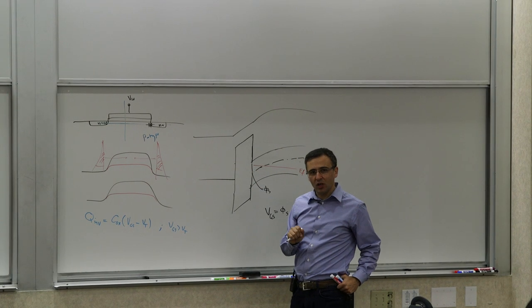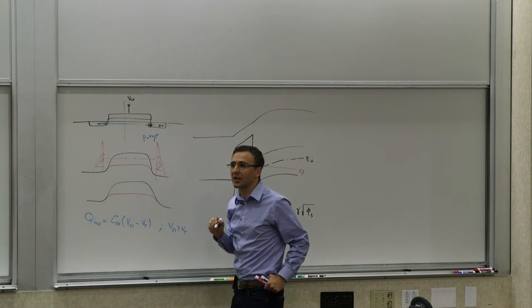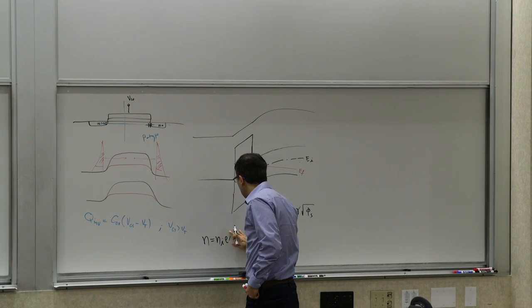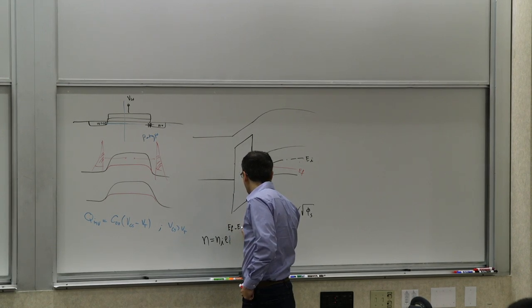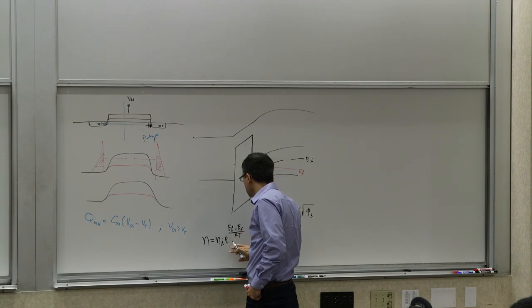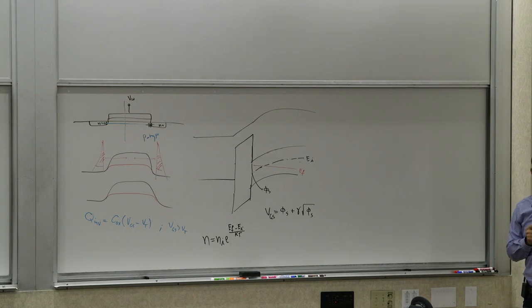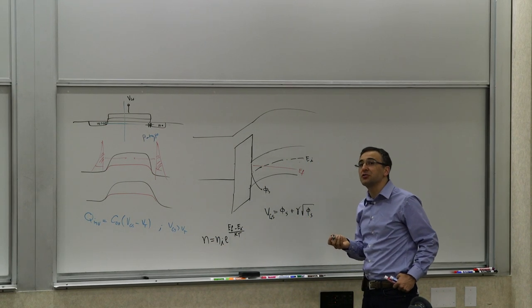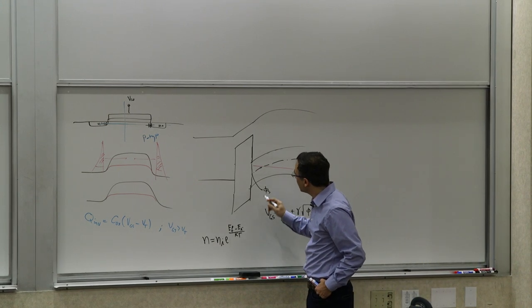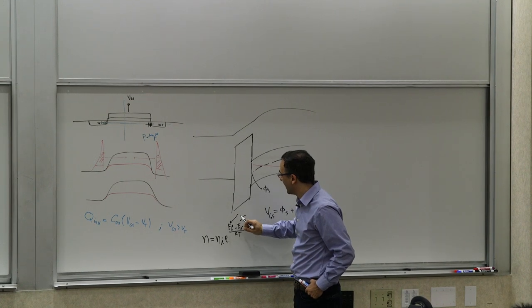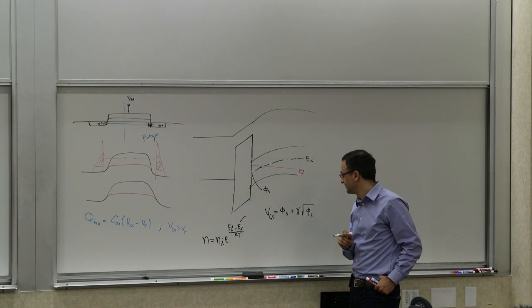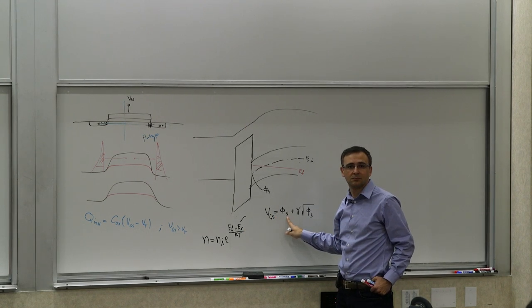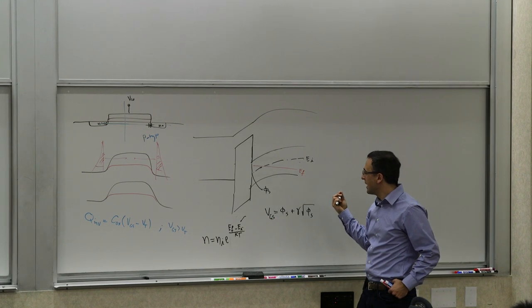Now the other question is, what is the carrier concentration in general at the surface, at this point, in the channel? So that carrier concentration, we have an expression for it. We know that n is ni times e to the (Ef minus Ei) over kT. So that's the density of the inversion charge, because it's going to be n-type. So the question is, can I come up with an expression for this based on these two? What do we know about the Ef and Ei on the surface? We know that the Ei is related on the surface to the phi_s.